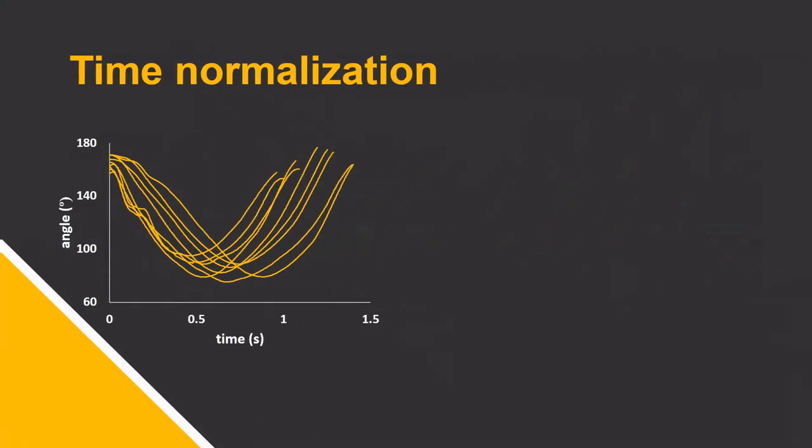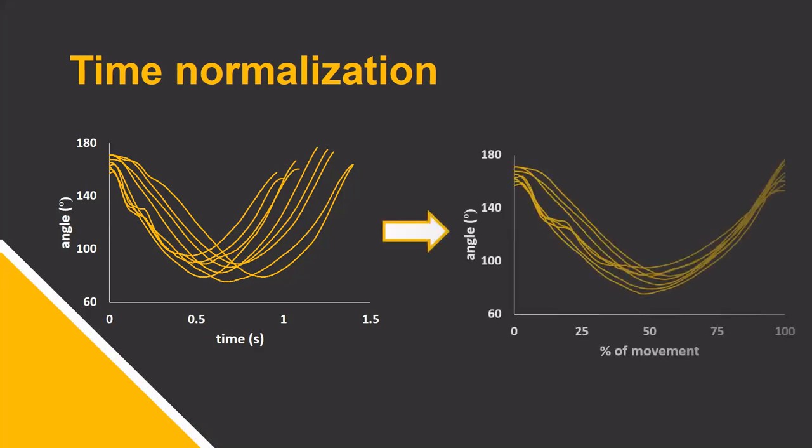We can account for these differing movement and phase durations through a process called time normalization, which temporarily aligns each trial. For example, normalizing each time series to a hundred values from zero to a hundred percent of the movement or phase.